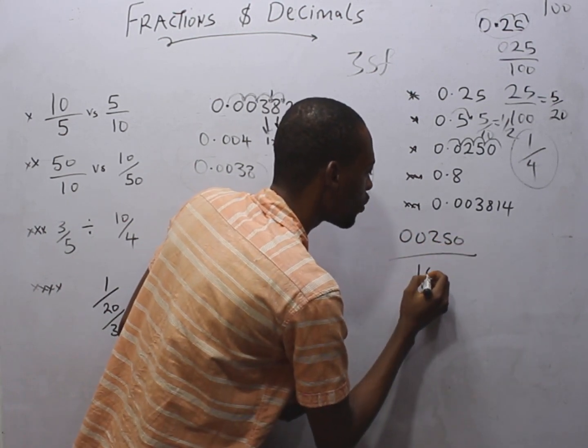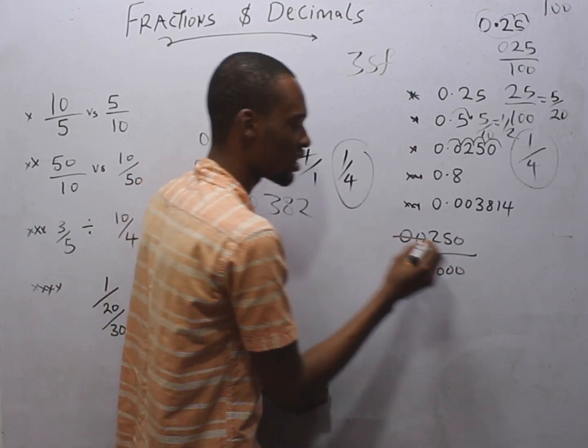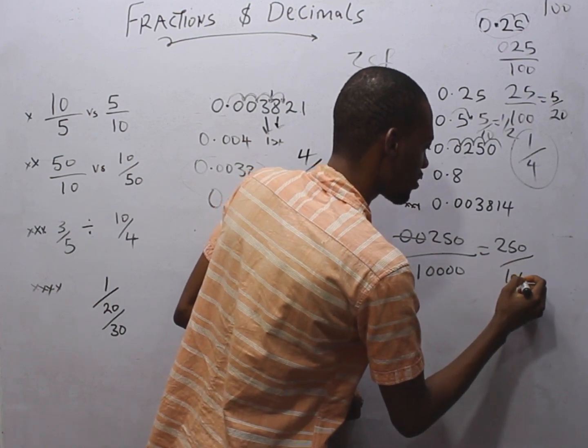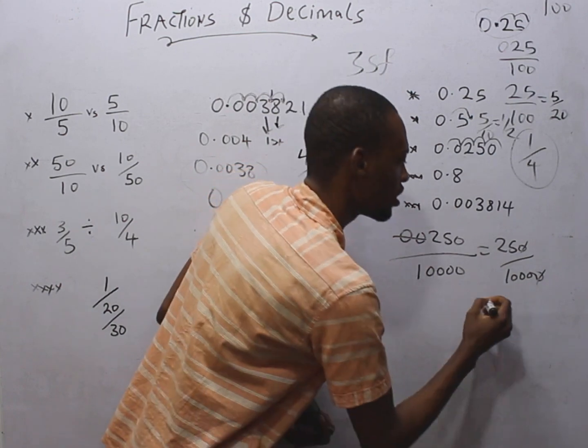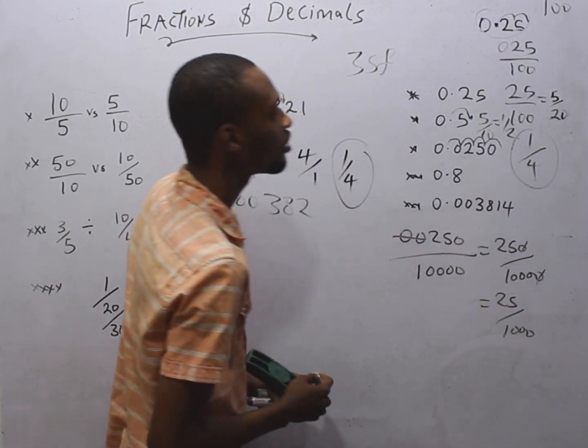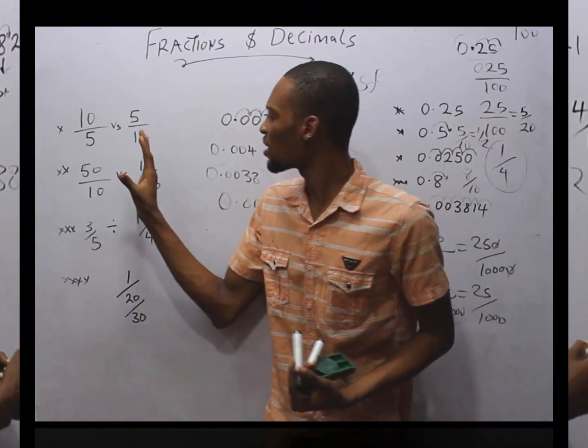4 zeros. This doesn't count. So this is the same thing as 250 over 10,000. You can say, okay, let 1 zero cancel 1 zero. This becomes 25 over 1,000. So we've gotten to something like this.